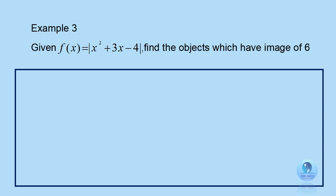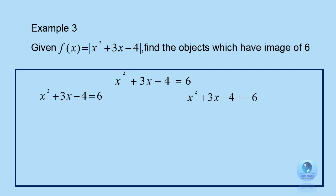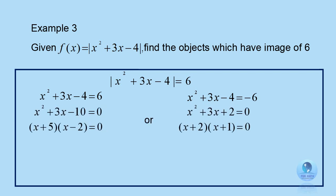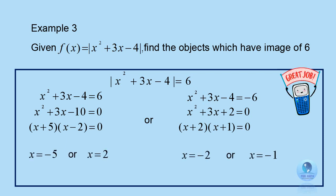Now let's look at the third example. Given f of x equals to modulus x squared plus 3x minus 4. Find the objects which have image of 6. To answer this question, you need to form this equation: modulus x squared plus 3x minus 4 equals to 6. Here, you need to solve these two quadratic equations and you get 4 different sets of x values. Remember, you need to check your answer by substituting all the x values into the equation, and you should get the final answer 6.